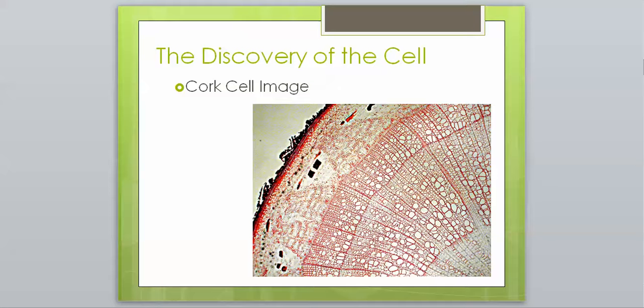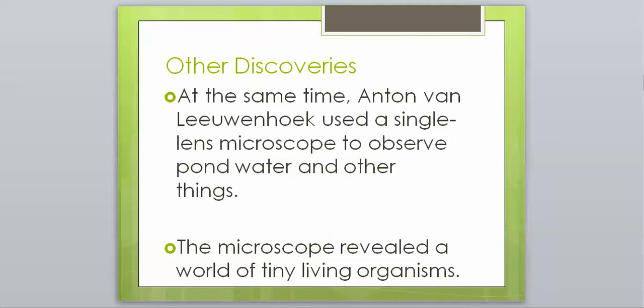Here is what a cork cell would look like. As you can see, there's a bunch of open spaces that would be those chambers he was talking about. Some other discoveries at the time, a guy by the name of Anton van Leeuwenhoek used a single lens microscope to observe pond water and other things. This microscope revealed the world of tiny living organisms. He is another one that looked at a microscope and saw a bunch of tiny living things.